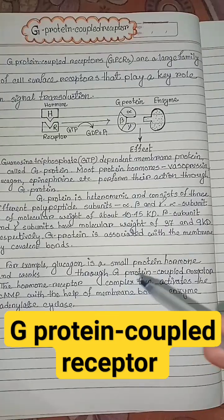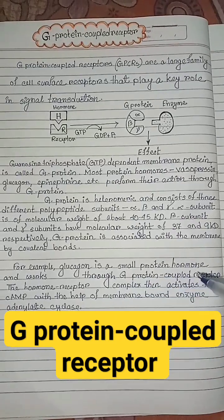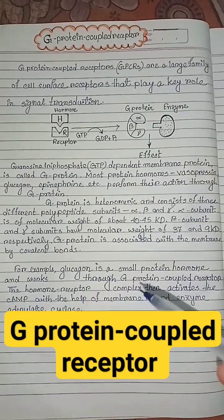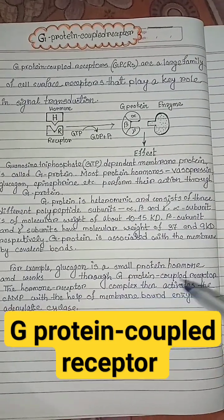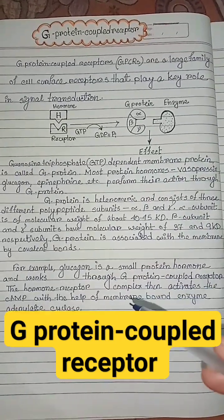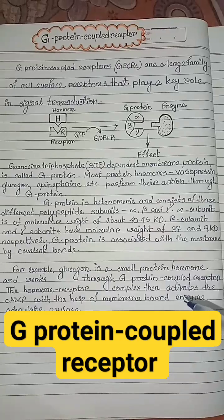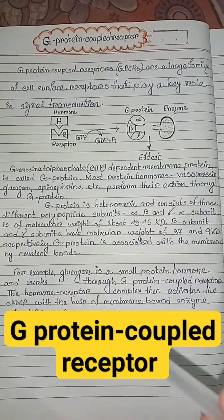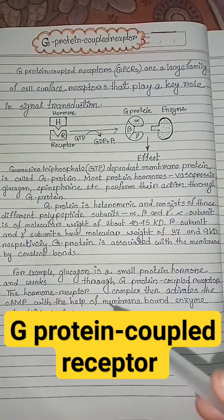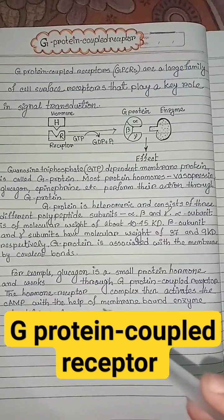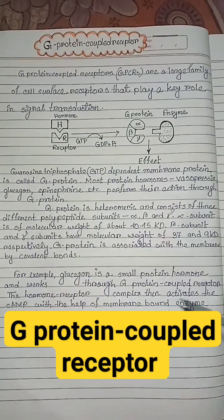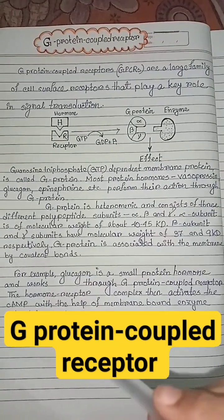For example, glucagon is a small protein hormone and works through G-protein coupled receptor. The hormone-receptor complex then activates cAMP with the help of membrane-bound enzyme adenylate cyclase.